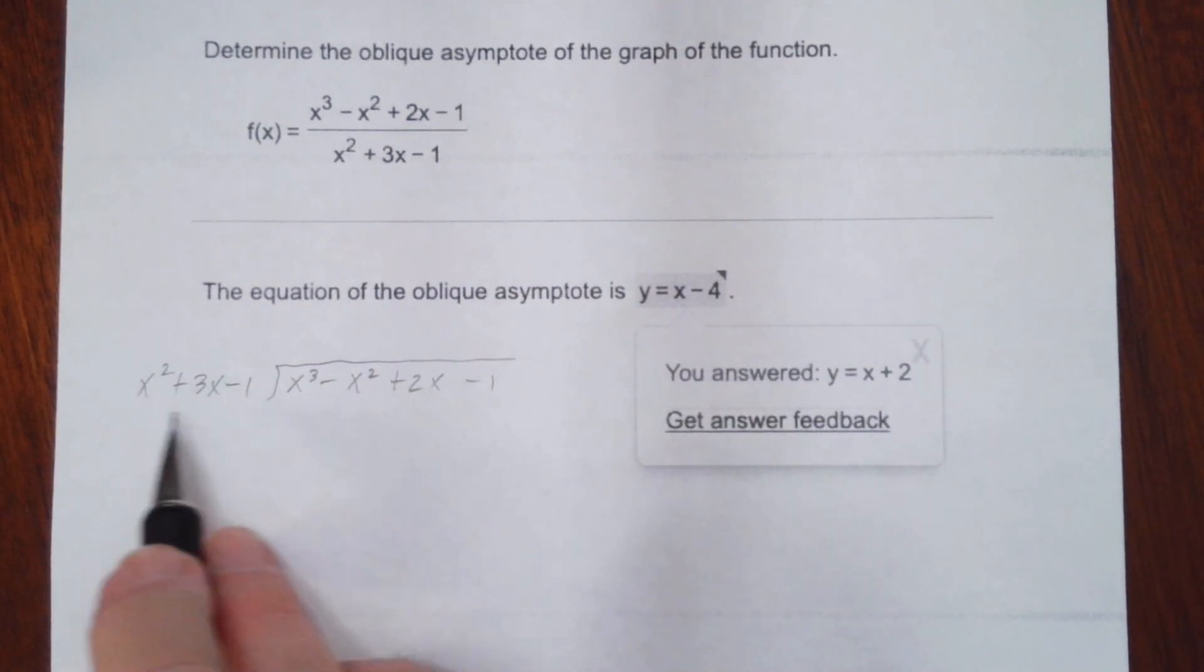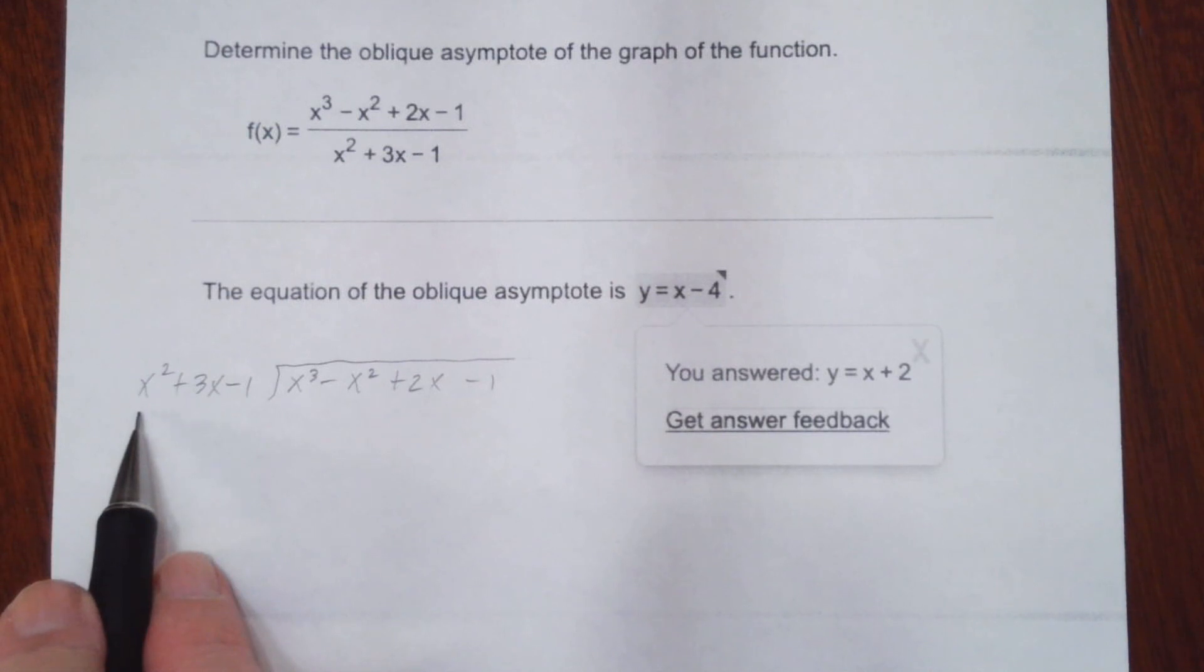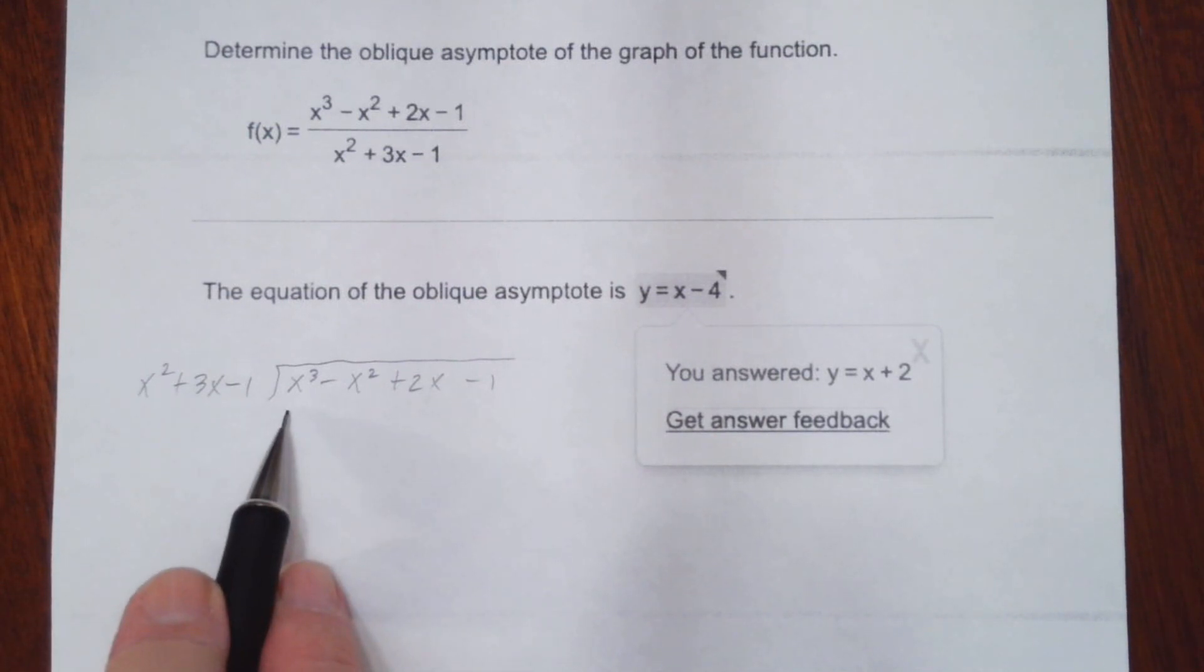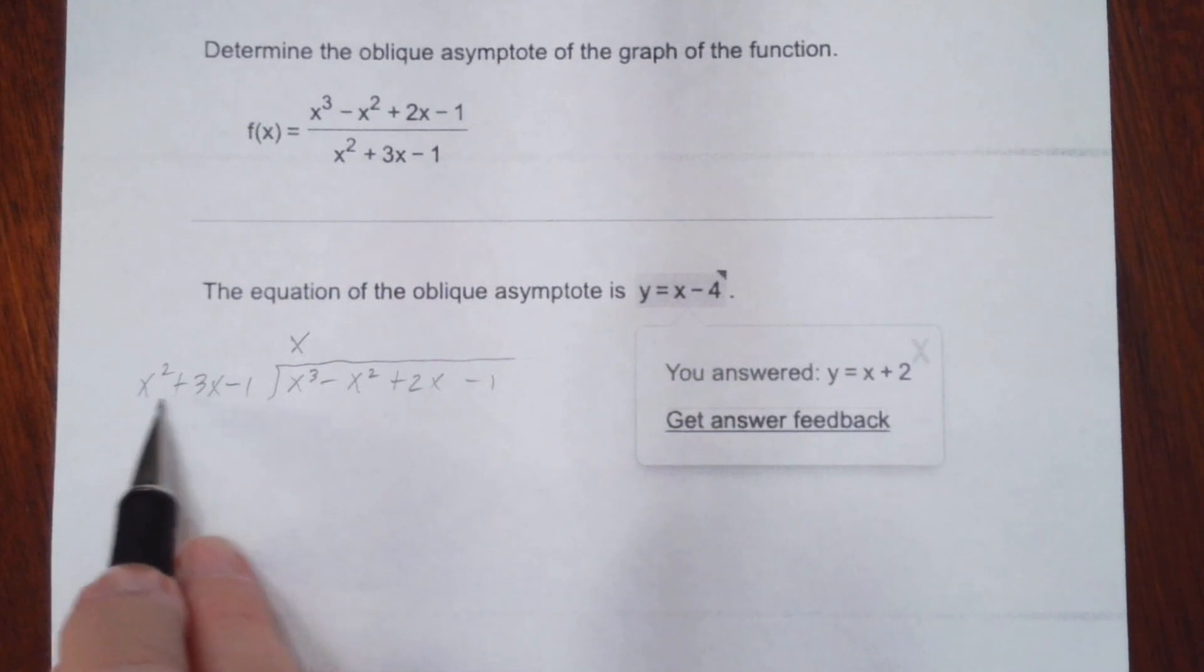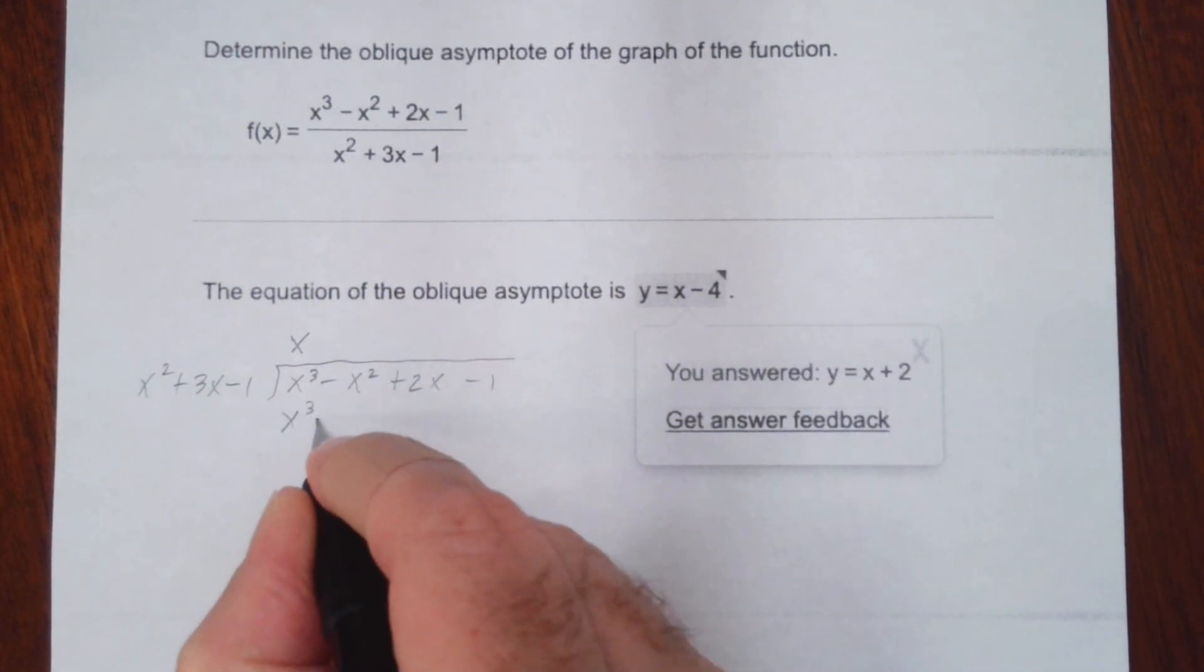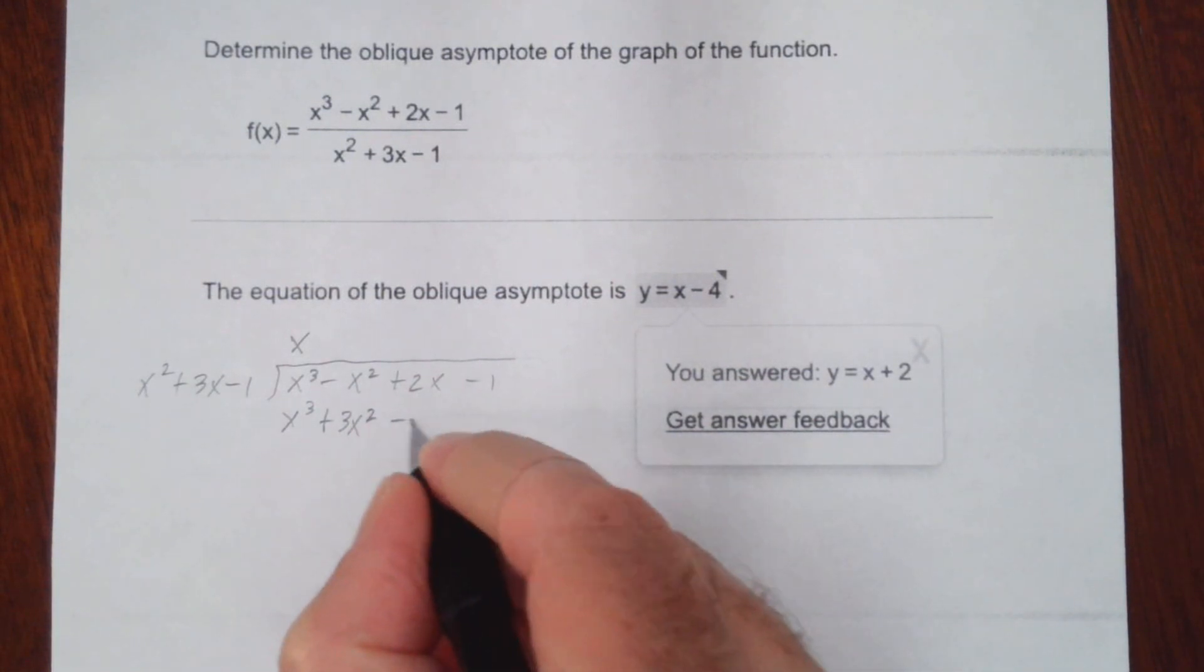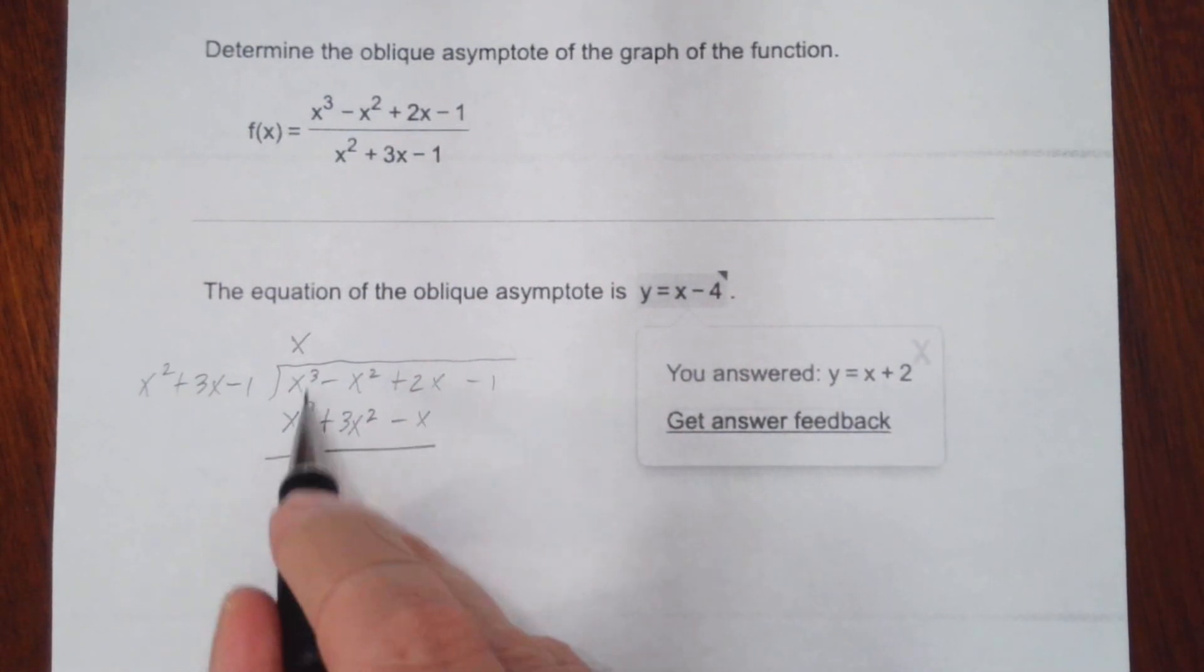Basically we look at the leading terms and we ask ourselves, what times x squared will give me x cubed? And of course that's just x. And then we'll multiply x times each term here. We get x cubed plus 3x squared minus x. Notice everything lines up here. You have your like terms.